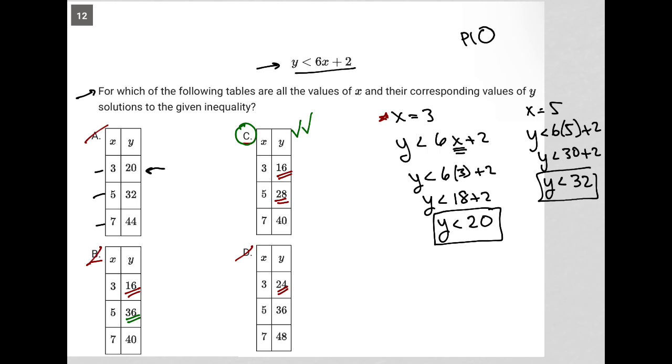The strategy we used here was plug in information from the answers, PIA. I'm plugging in the 3 that I see here and then the 5. There is no need to get down to the 7 because I got my answer from just plugging in 3 and 5. Plug in answers is the strategy that we used here.